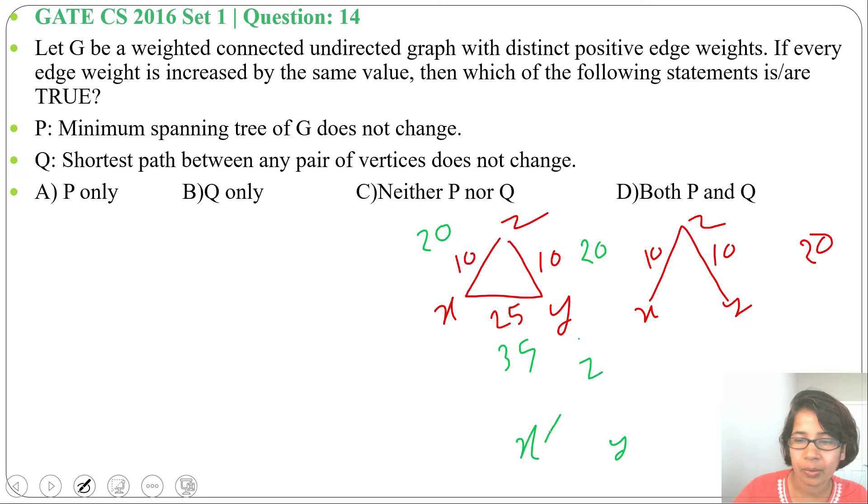So the minimum spanning tree is not changing, but total cost is changing. Previously cost was 20, now cost is 40. So cost is changing but the minimum spanning tree is not changing. Next, Statement Q: Shortest path between any pair of vertices doesn't change.